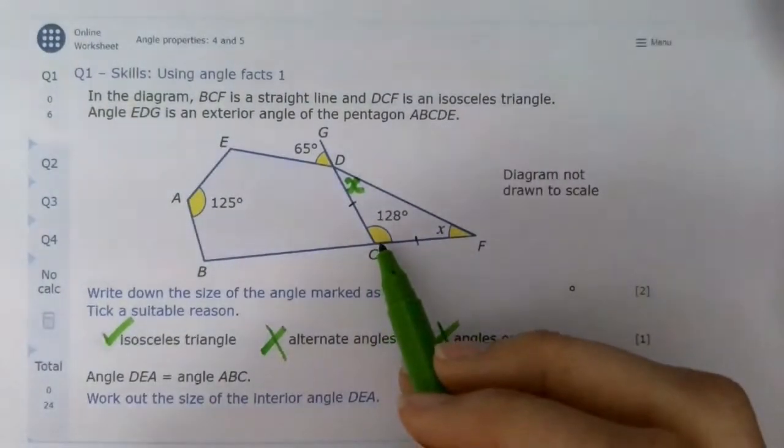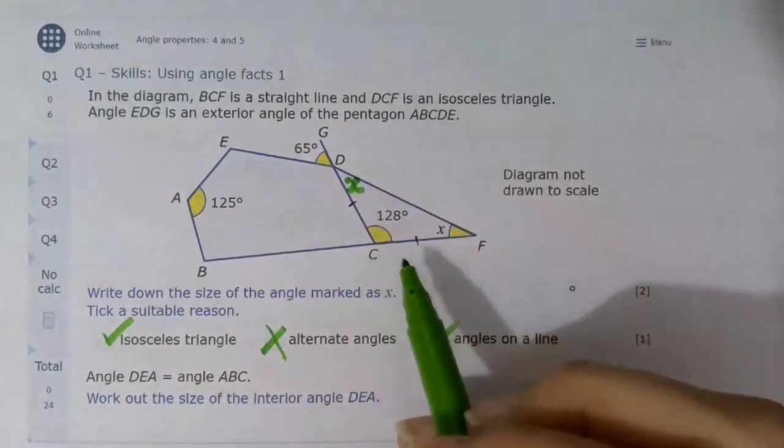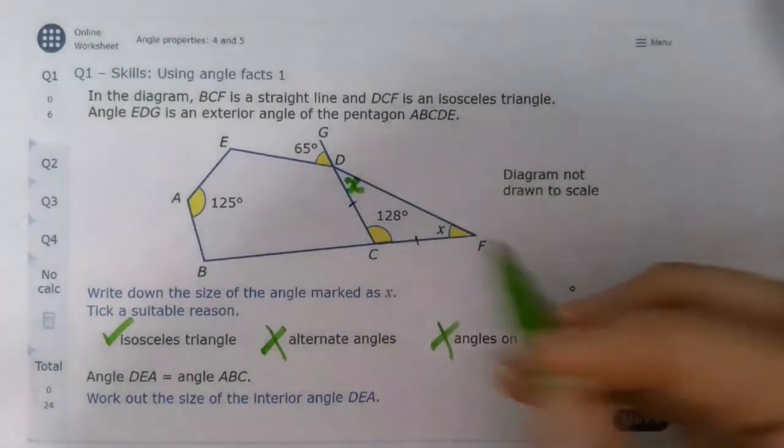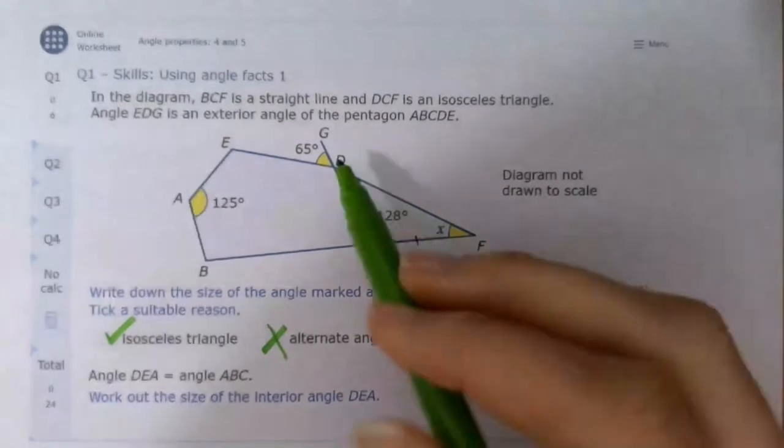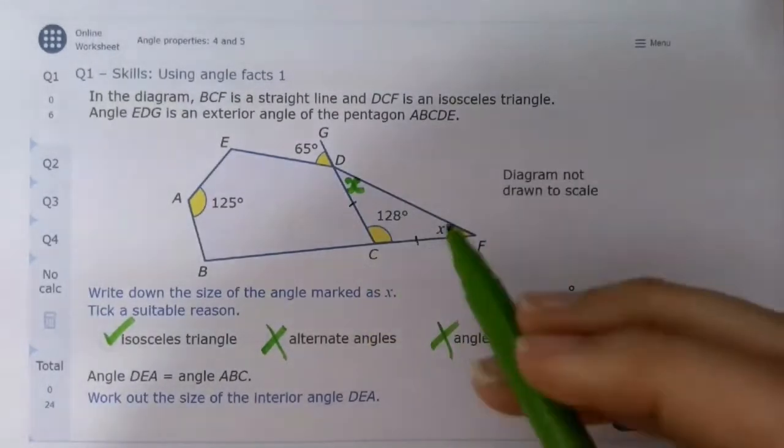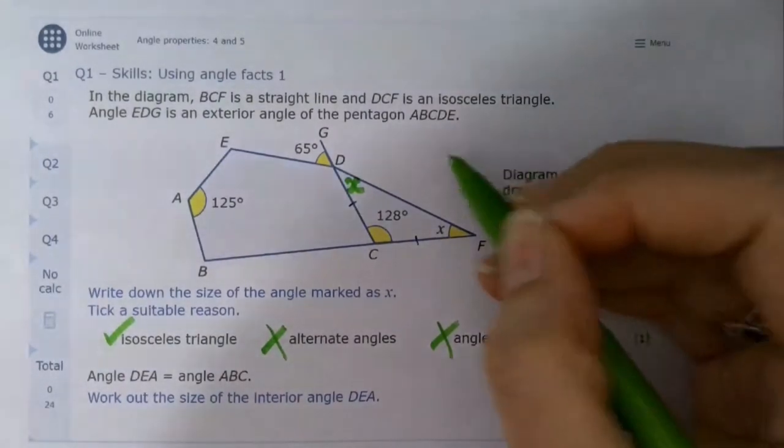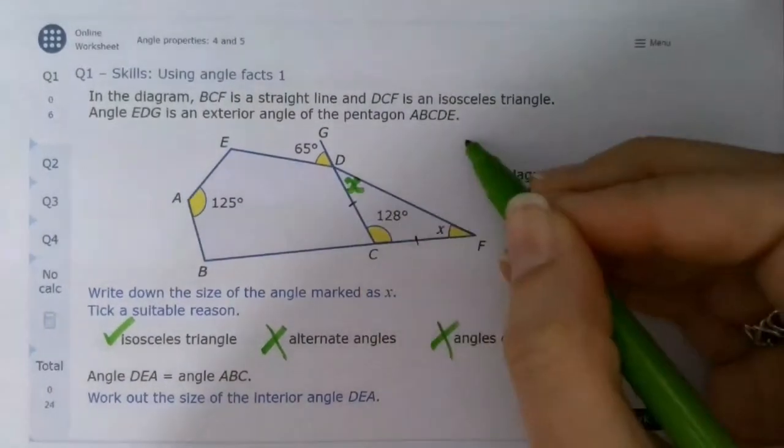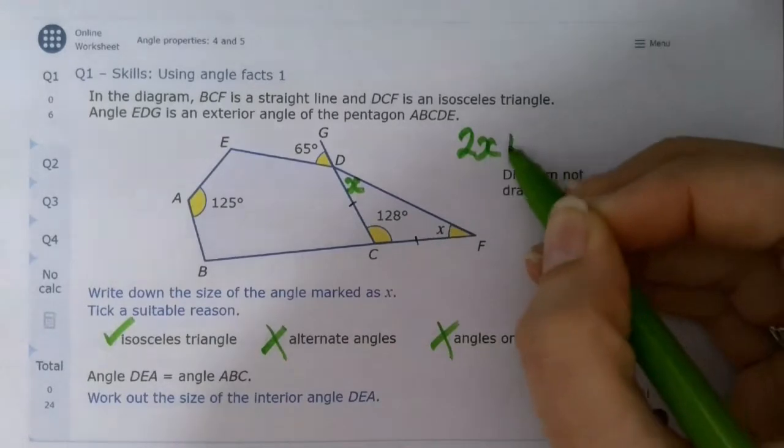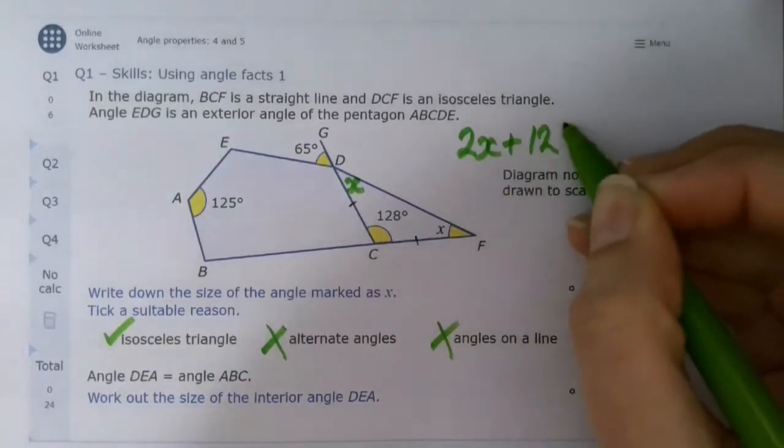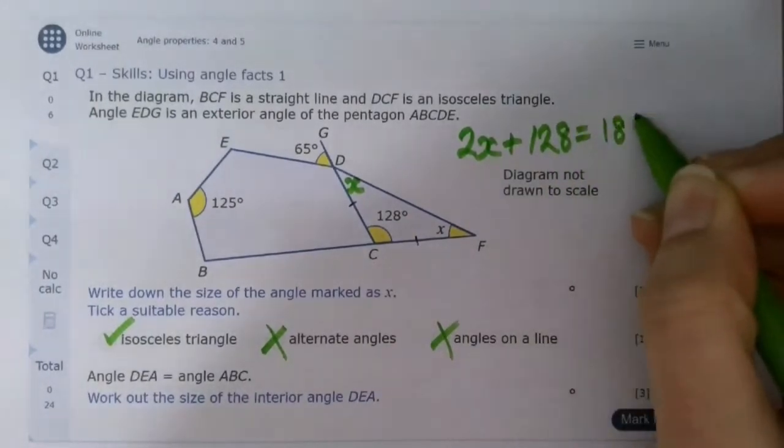We can tick that already because although x is on the same line as 128, they don't fit together. So now we know that we have this triangle CDF, and we know the angles inside any triangle must add up to 180 degrees. So that means we've got x and x, which is 2x, add 128, and we know that's got to equal 180 degrees, and we can solve that equation to find out x.